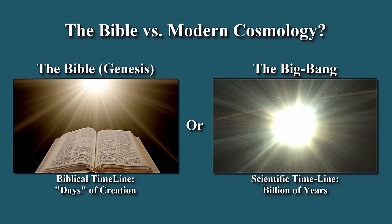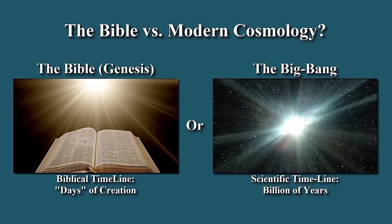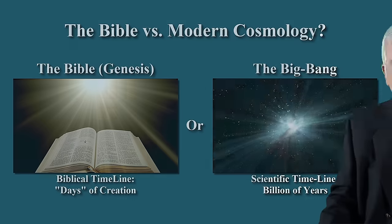Is Genesis creation story compatible with the scientific-cosmological timeline as measured in billions of years? How can one respond to this question debated since the very beginning of modern science?